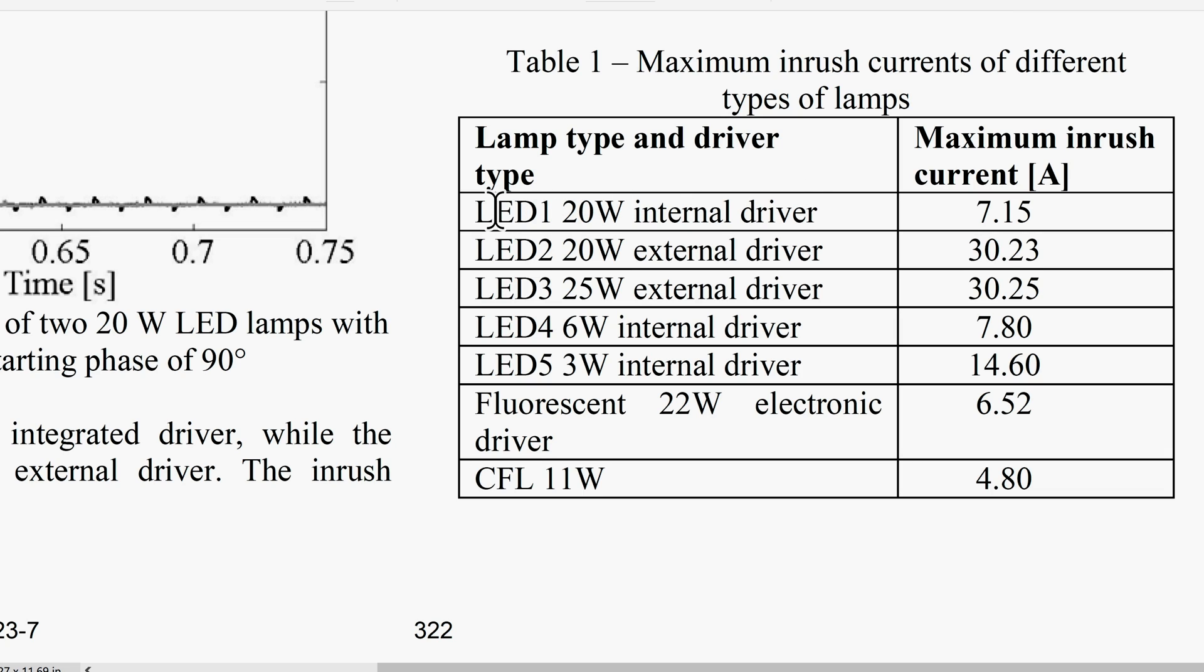And just having a look at some of the results. Their 20 watt LED with internal driver, the maximum inrush current they found was 7 amps. And then they had another LED using an external driver. And one can see that it's not uncommon to get these very high currents. This is 30 amps. And even here a 3 watt internal driver. That is a small LED light. And look at that maximum inrush current. 14 amps.